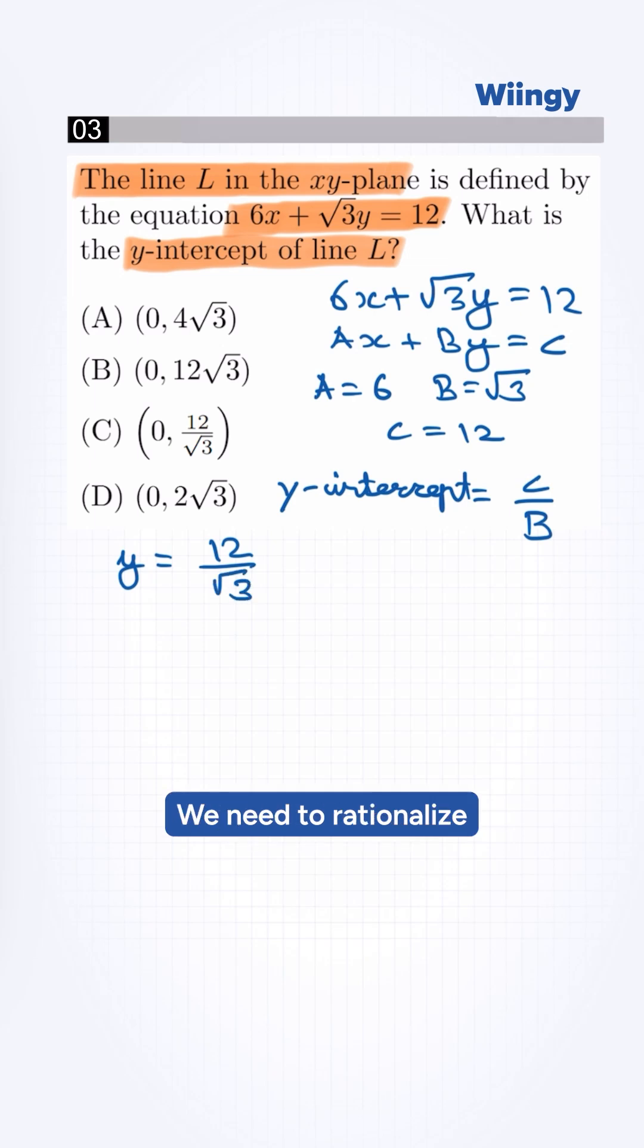We need to rationalize the denominator, so we multiply root 3 by root 3. This will be 12 root 3 by 3.